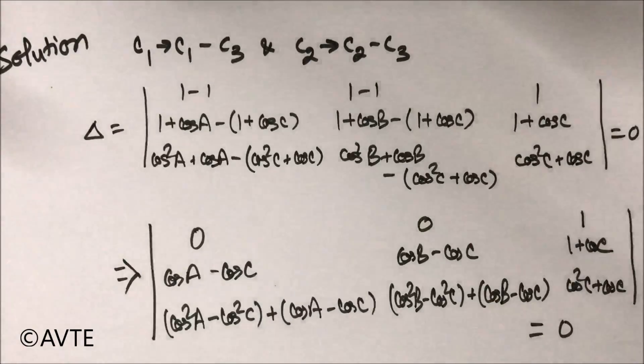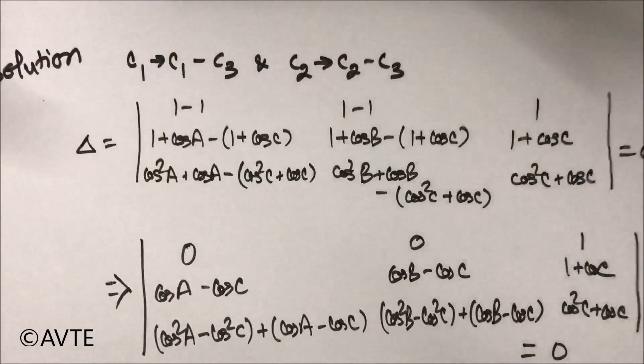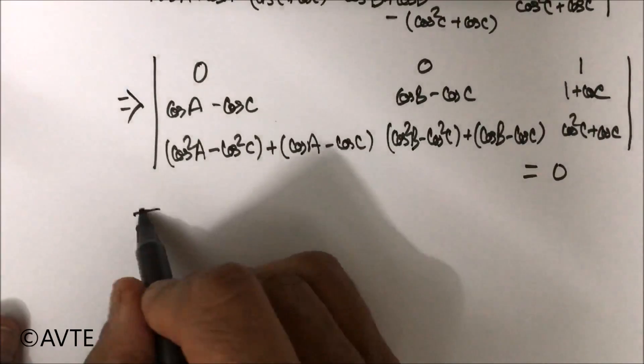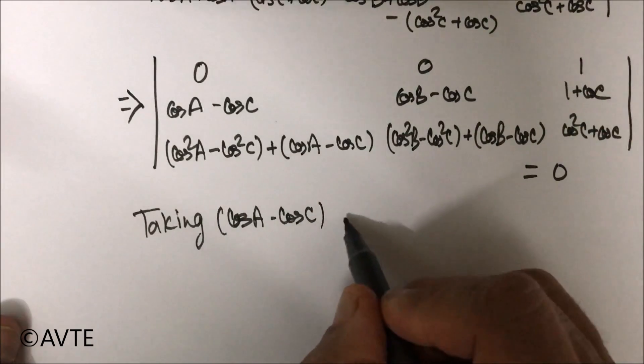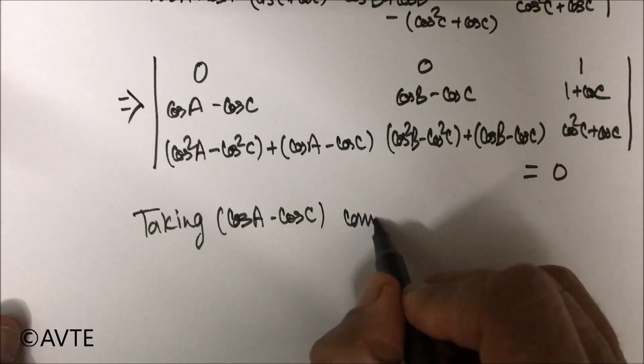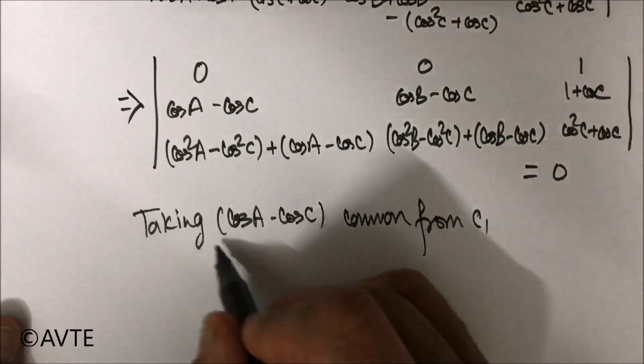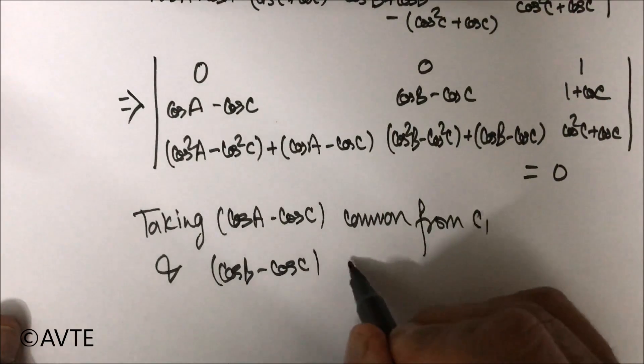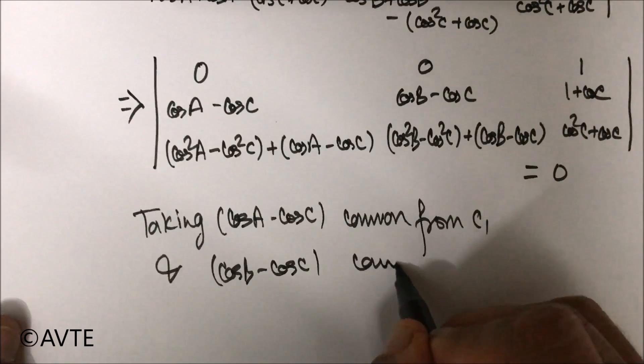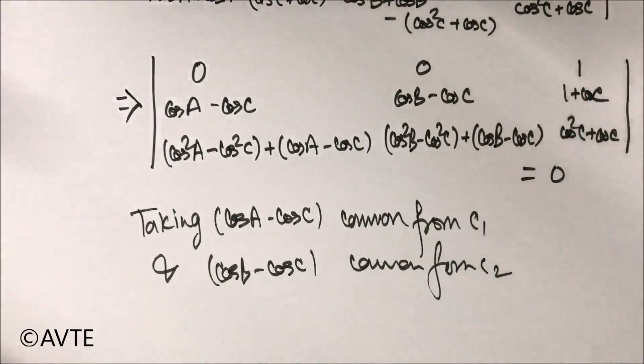So there are two ways. Either you can take that to two cross two or you can take cos A minus cos C common from column one and cos B minus cos C common from column two. So this will be a further simplification. Now after that, when you take common, you will be left with...